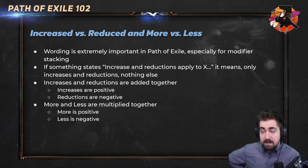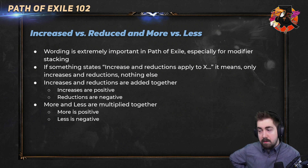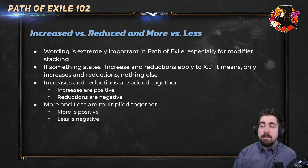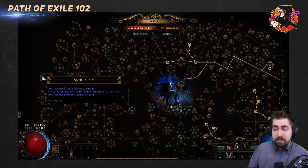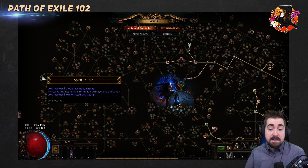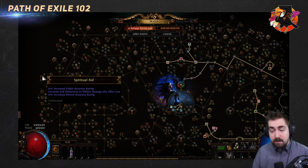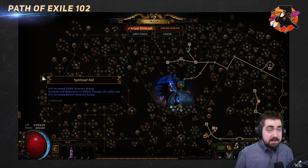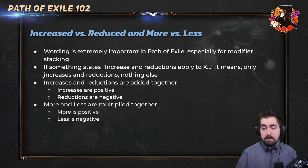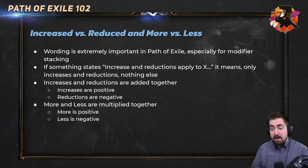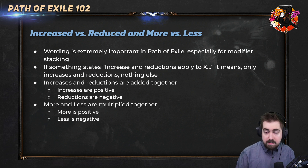If something states 'increases and reductions applied to X,' it means only increases and reductions — not more. A great example of that is Spiritual Aid, a very complicated node in Path of Exile. Basically what it does is: increases and reductions to minion damage also affect you. Some players new to the game take Spiritual Aid but try to use minion damage support — that doesn't work because minion damage support gives more damage, not increased. Increases and reductions are added together — it's just additive.